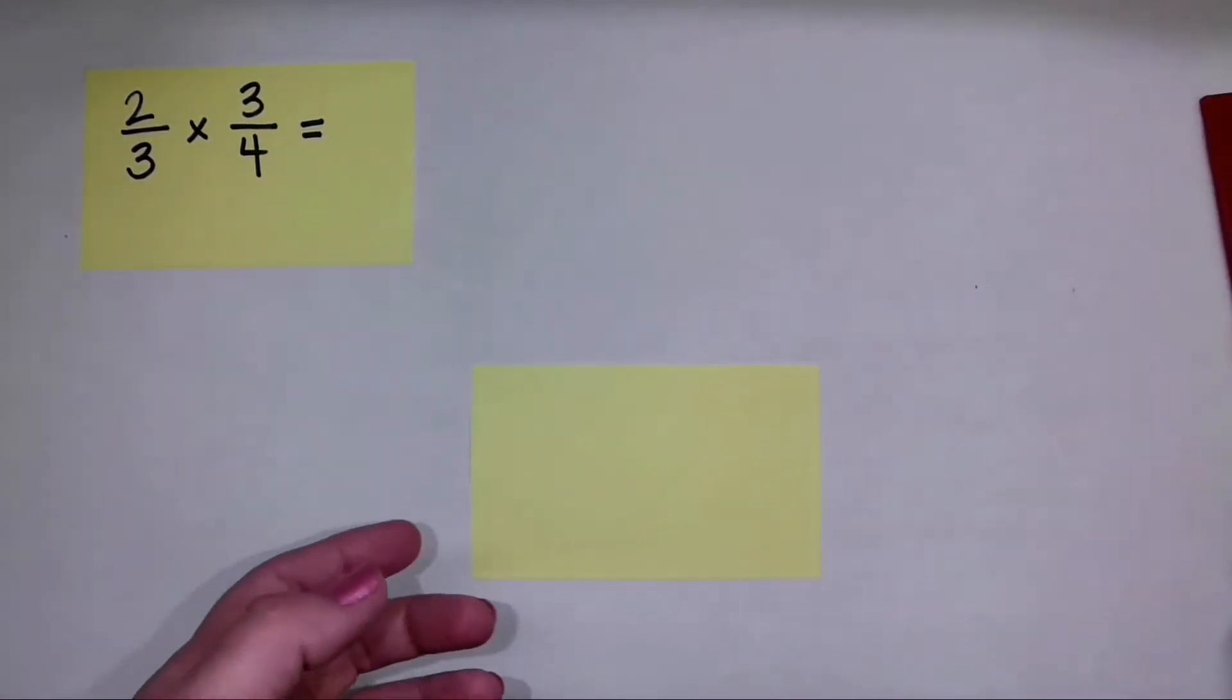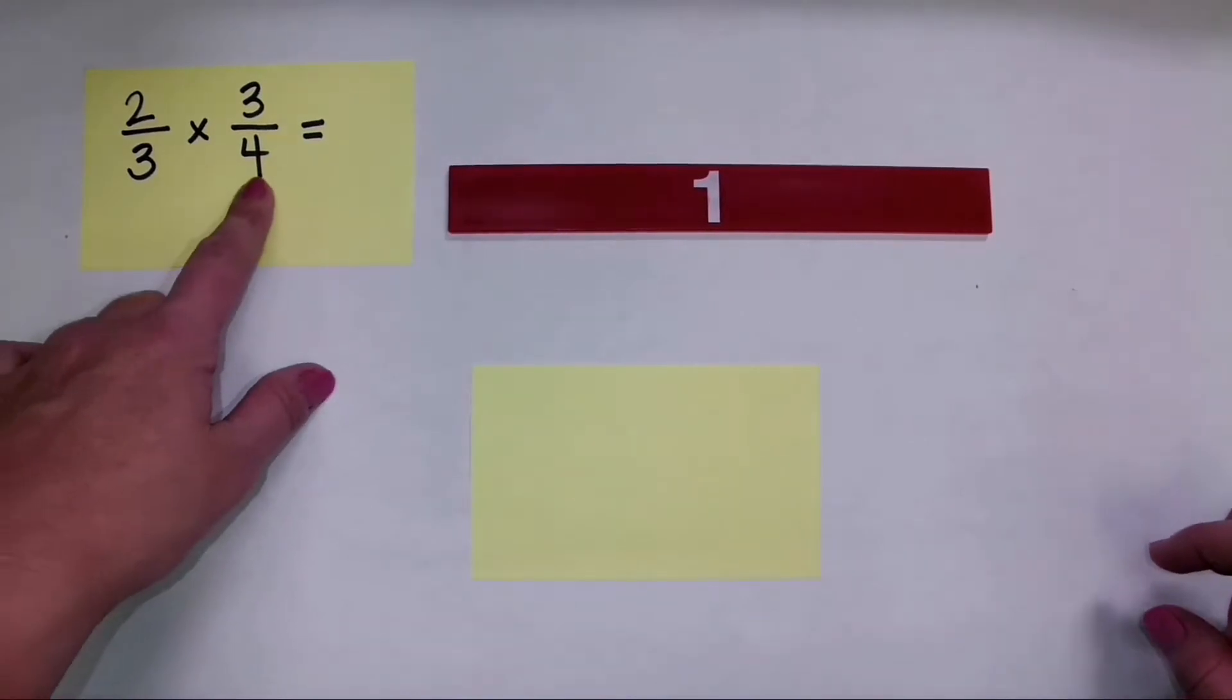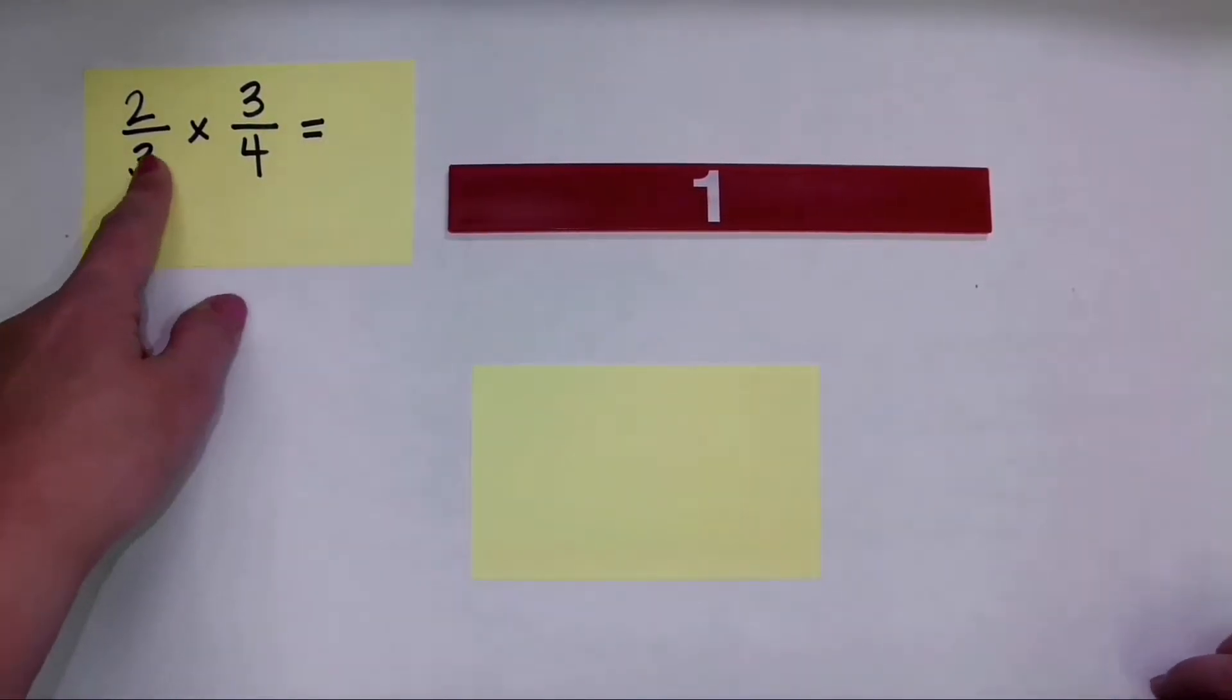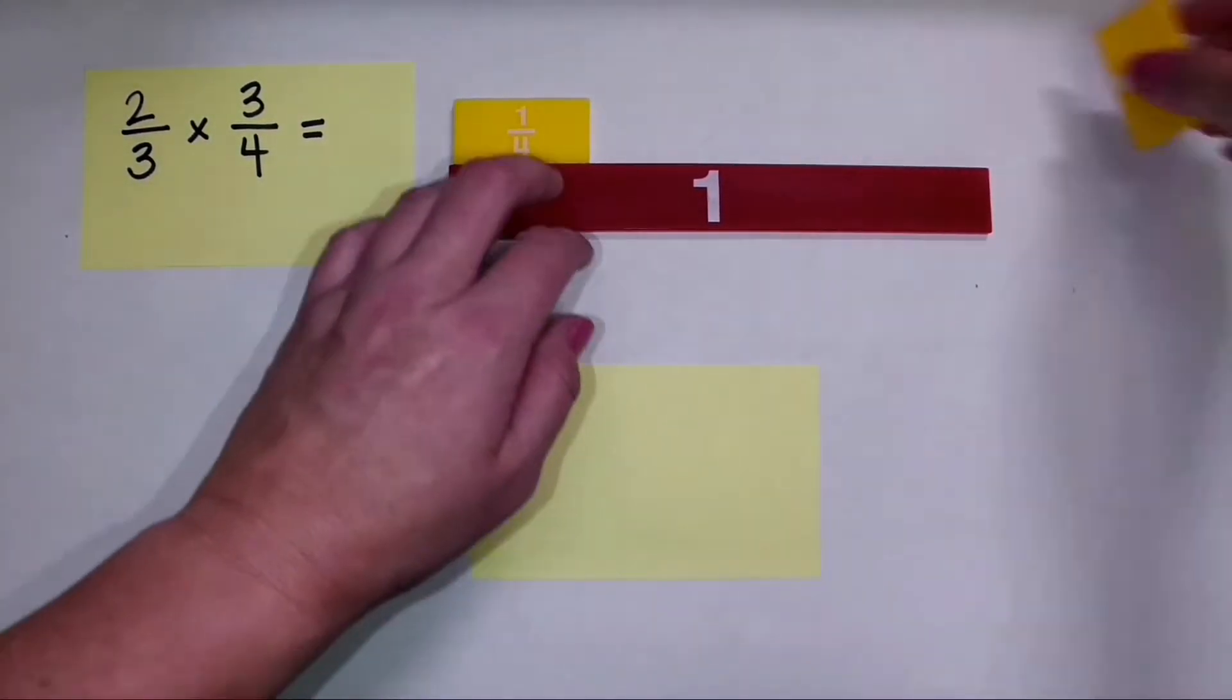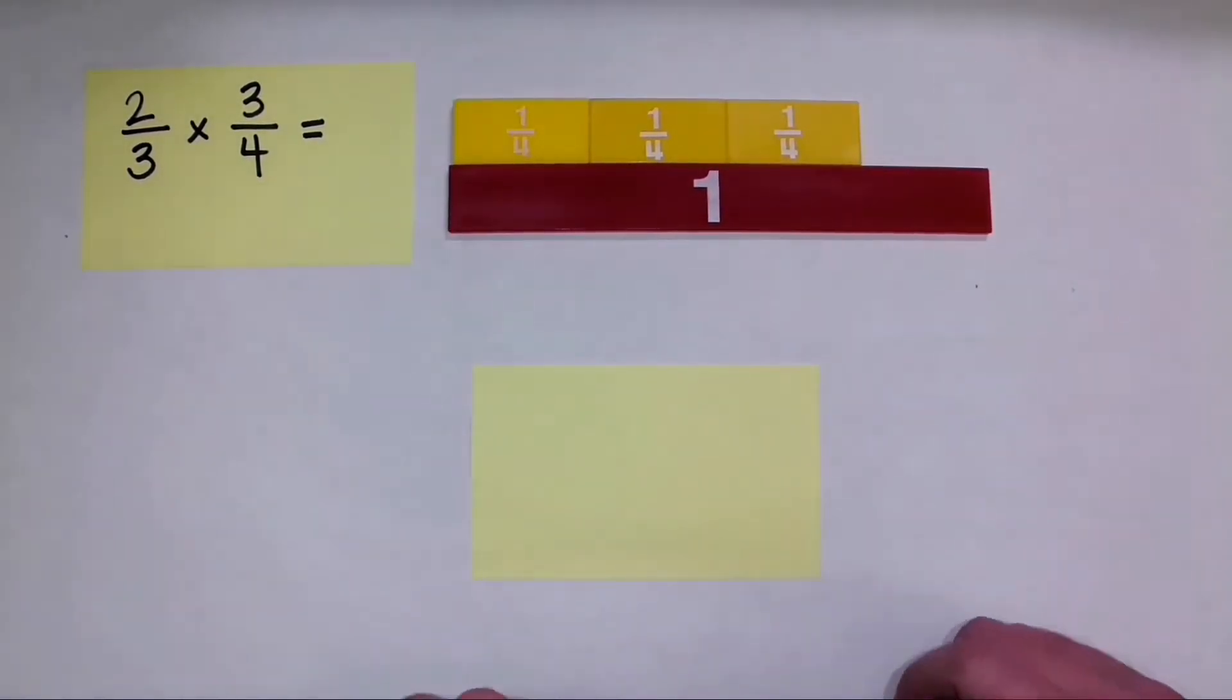Now whenever you want to visually show the multiplication of fractions, you're always going to start with the second fraction. Because I want to find the first fraction of the second fraction. And the second fraction today is 3 fourths. So I'm going to take my 3 one fourth pieces there.